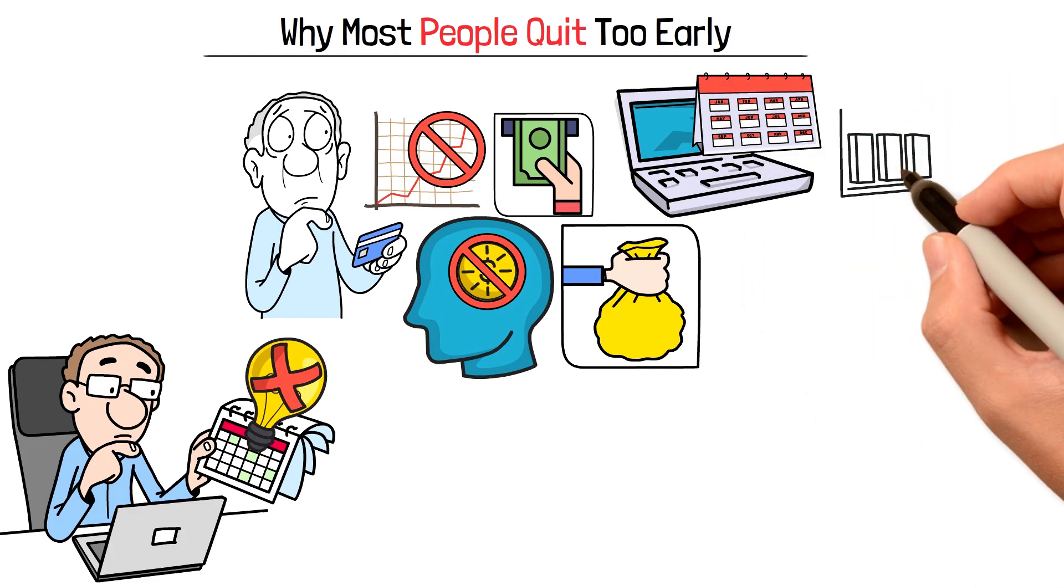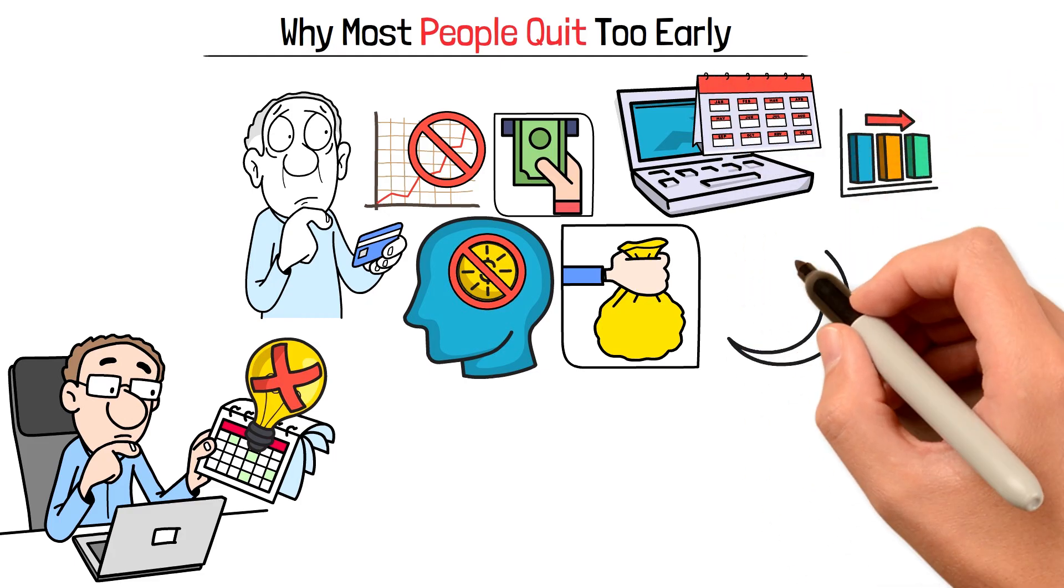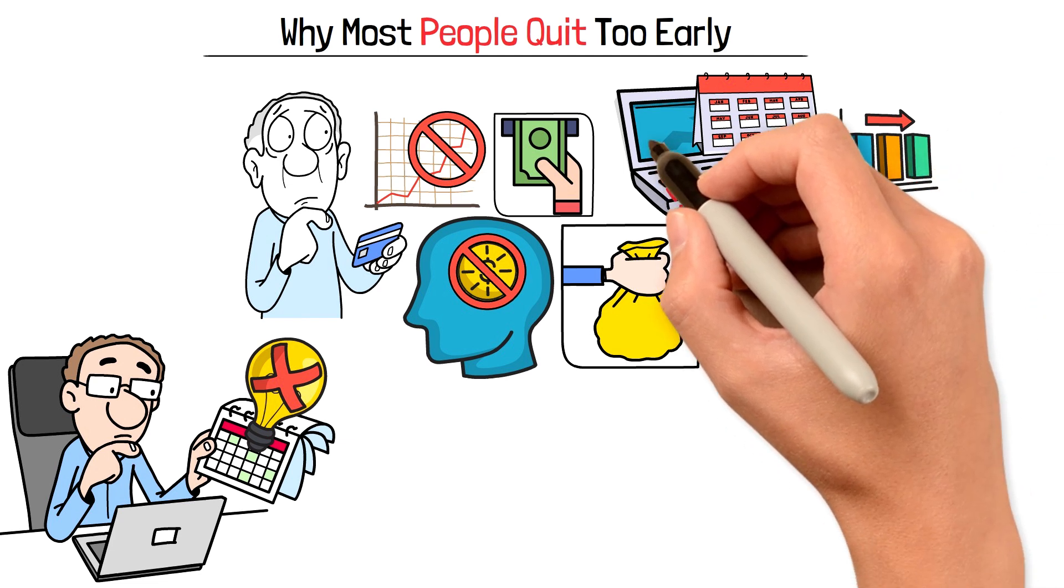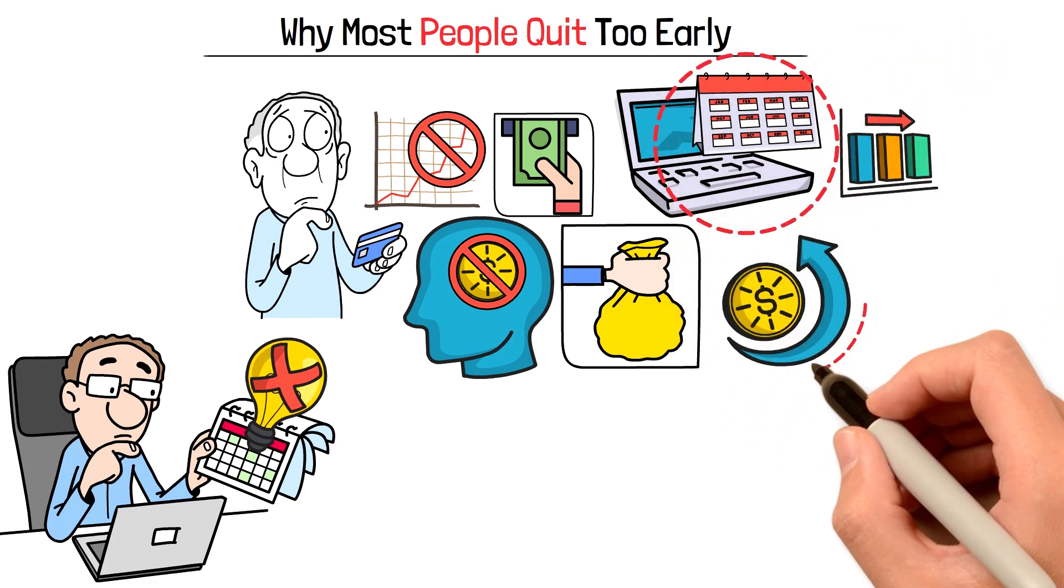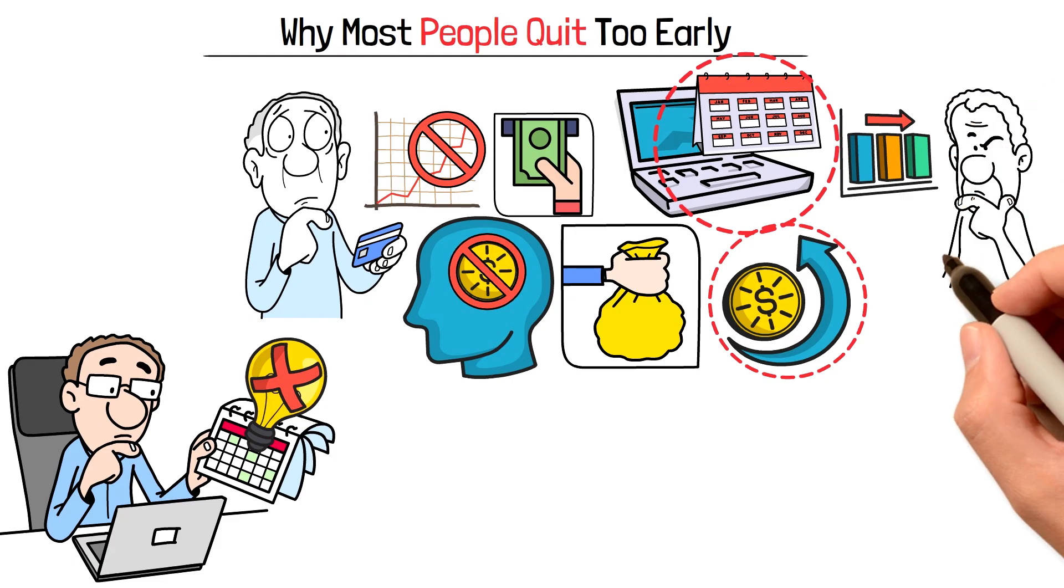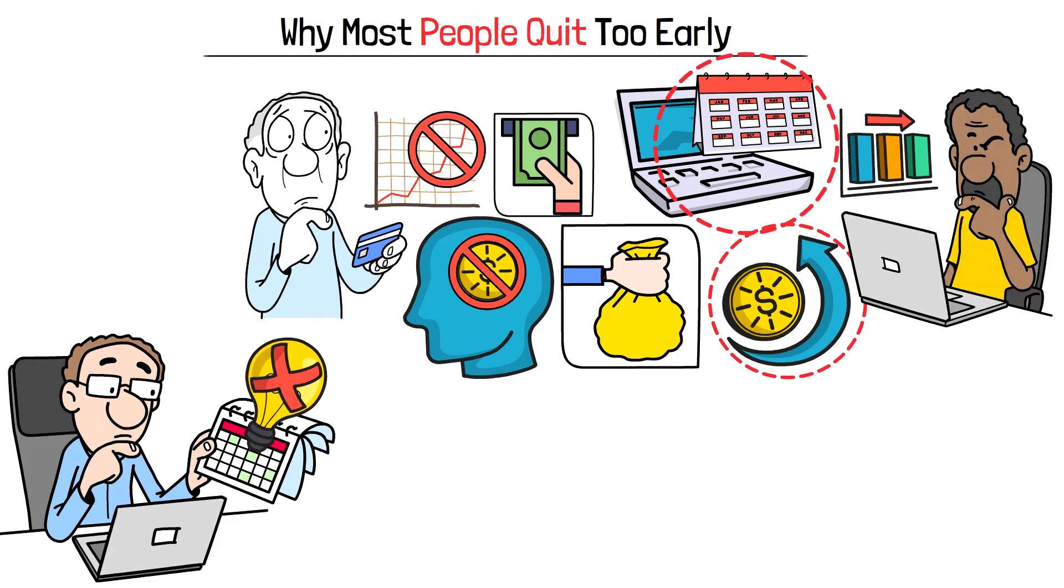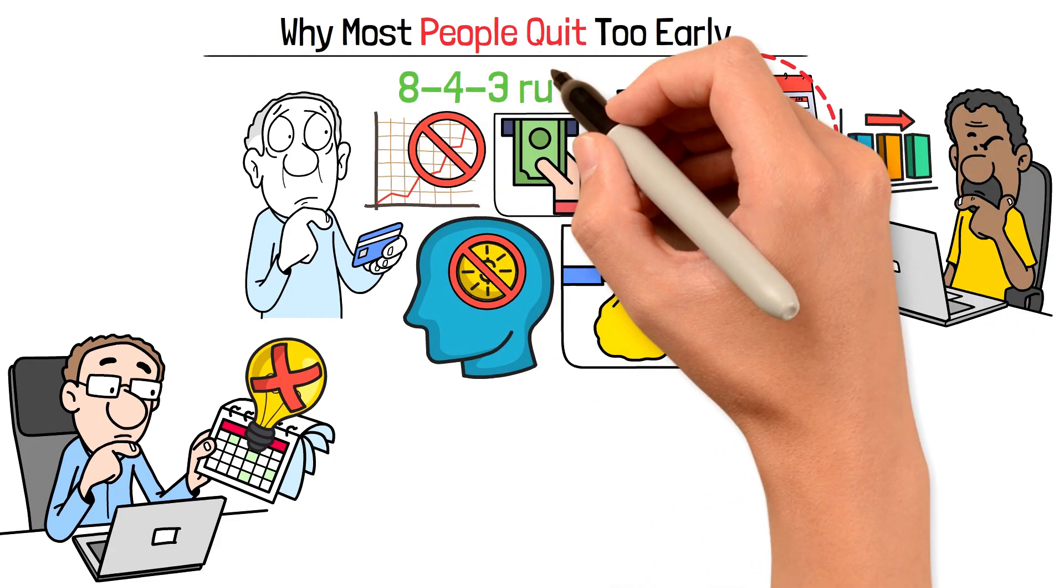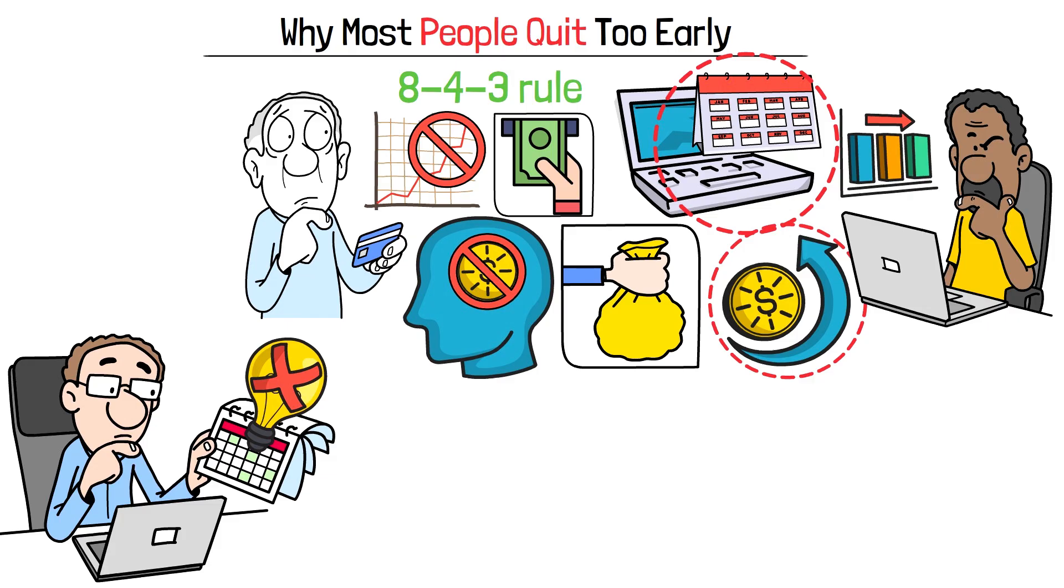The problem is that humans think linearly while compound interest works exponentially. We expect steady, predictable growth. But compound interest starts slow, builds momentum, and then explodes in ways that seem almost impossible.